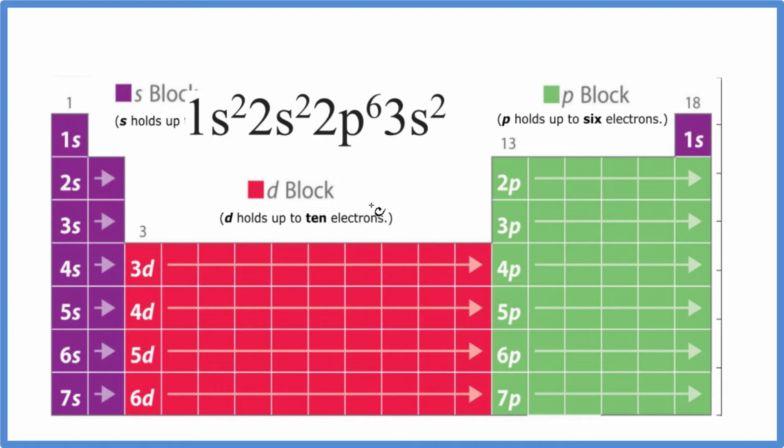Then we go to the d orbital block. That can hold up to 10 electrons. So we go d¹, 2, 3, all the way up to 10. Then we have the p block, which can hold up to 6. So p¹, 2, 3, 4, 5, and 6.